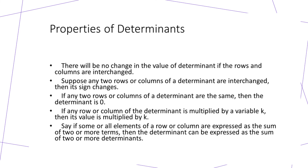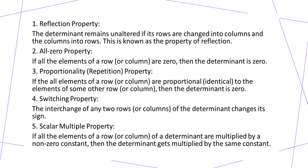Now let's understand these properties by name. First, the reflection property states that the determinant remains unchanged if you interchange its rows or columns. Next, the all-zero property states that if all elements of a row or column are zero, the value of the determinant is zero. Then the proportionality or repetition property states that if the elements in a row or column are proportional or identical to the elements of another row or column, the determinant is zero.